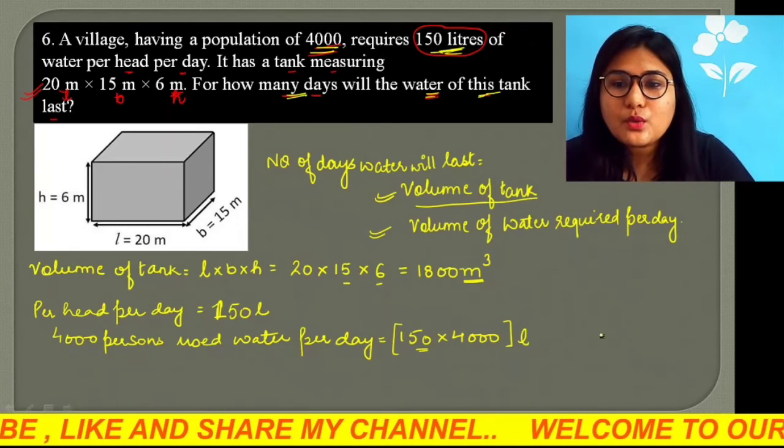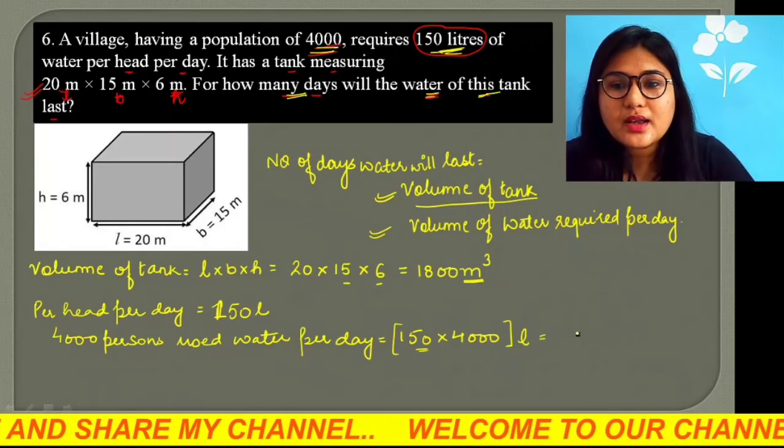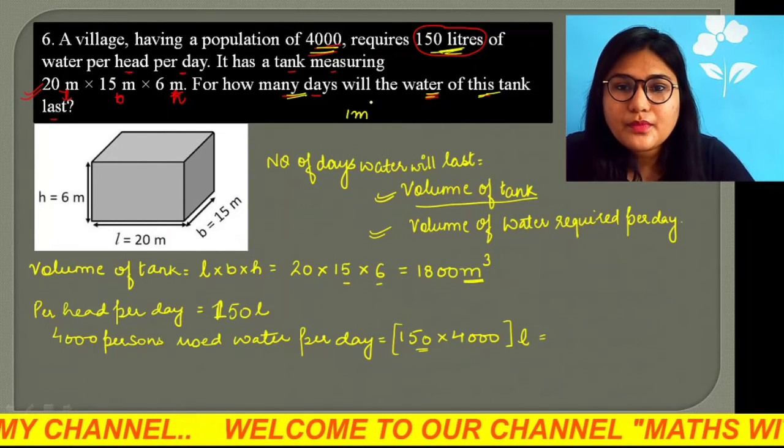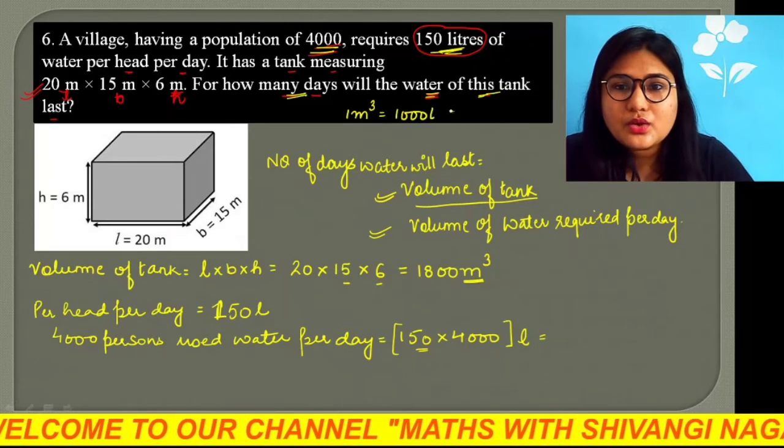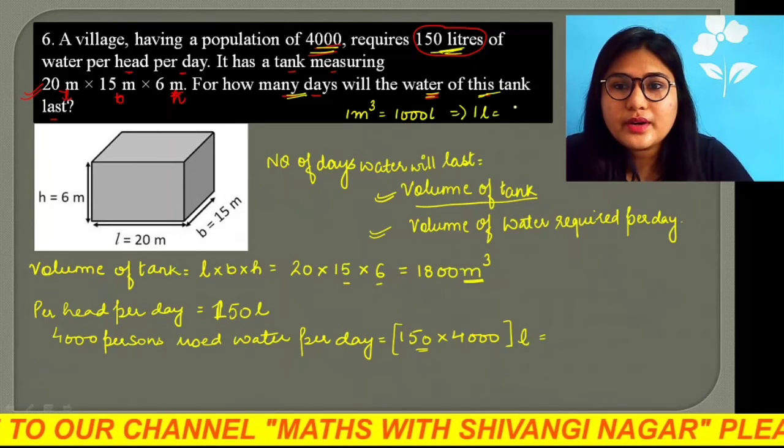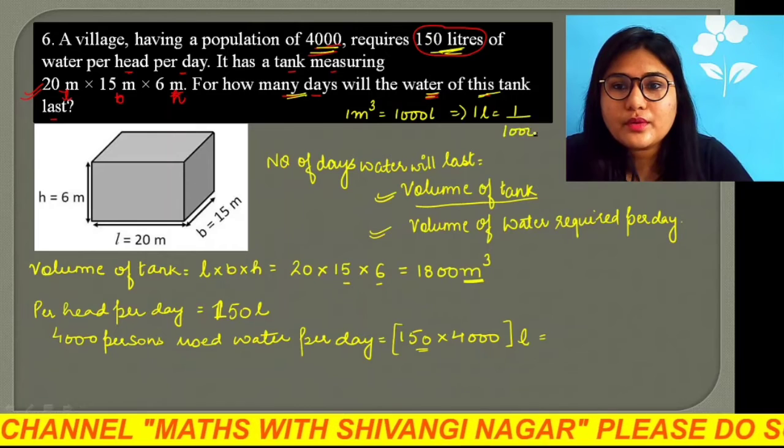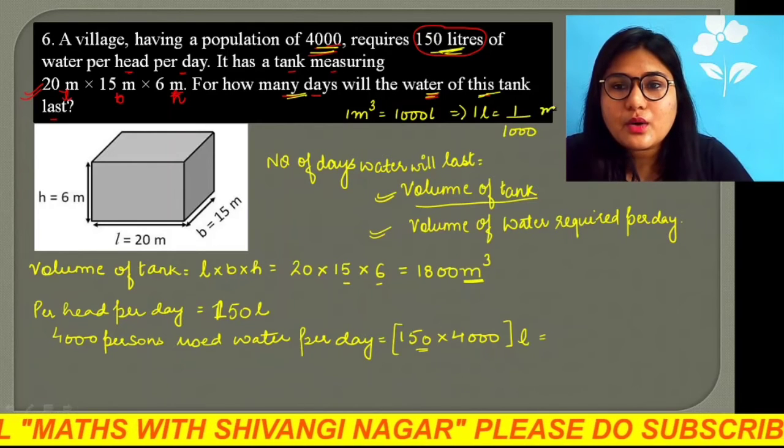So, if you convert it in meter cube, what do we do? We know that one meter cube is equal to 1,000 liter. So, if we convert one liter, what do we do? So, what do we do? 1 upon 1,000, divided by meter cube.